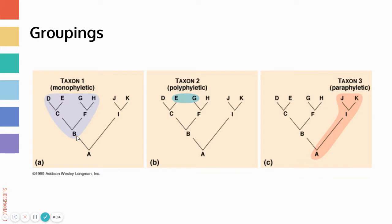A polyphyletic group is a group that does not include the most recent common ancestor. For example, E and G — to find their most recent common ancestor you'd go back to B, but this group doesn't include B. Grouping bees and bats together would be polyphyletic, because we're not including their common ancestor — whatever that organism would be, it would need to be included for it to be anything else.